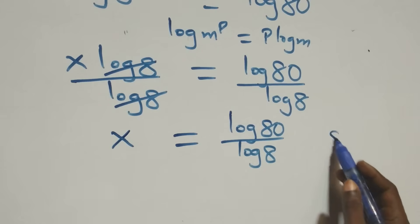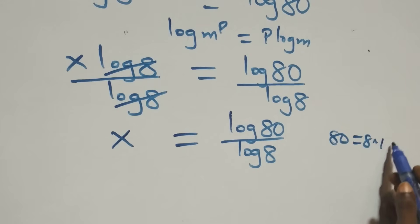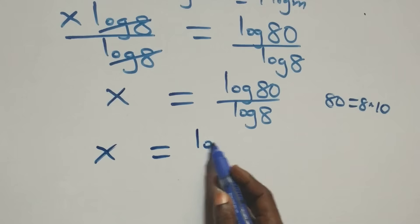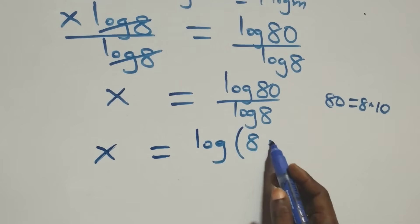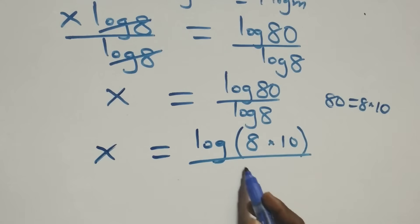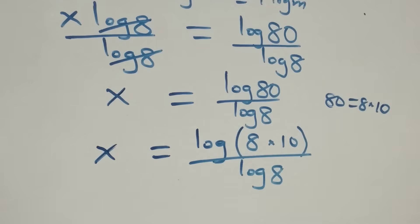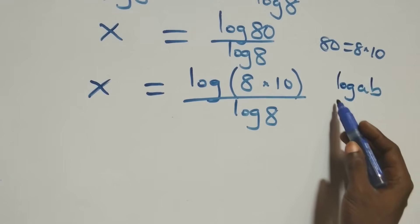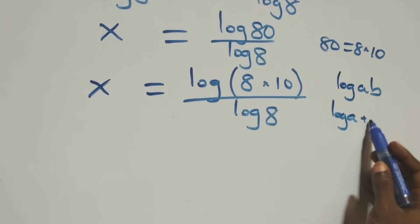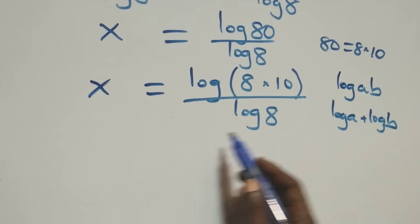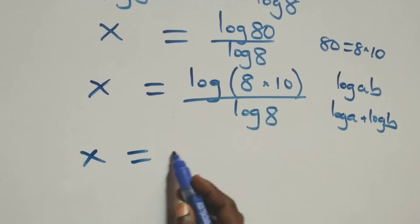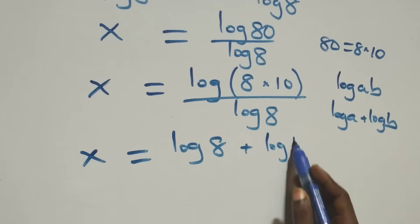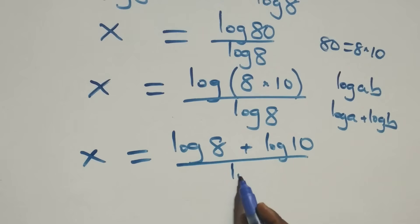From here we can express 80 as 8 times 10, which gives x equals log(8×10) over log 8. Then by the product law of logarithms — log(a·b) = log a + log b — we get x equals (log 8 + log 10) over log 8.